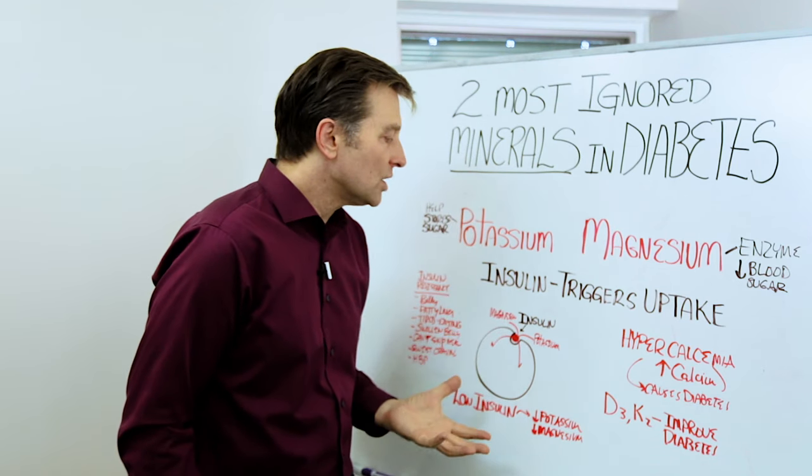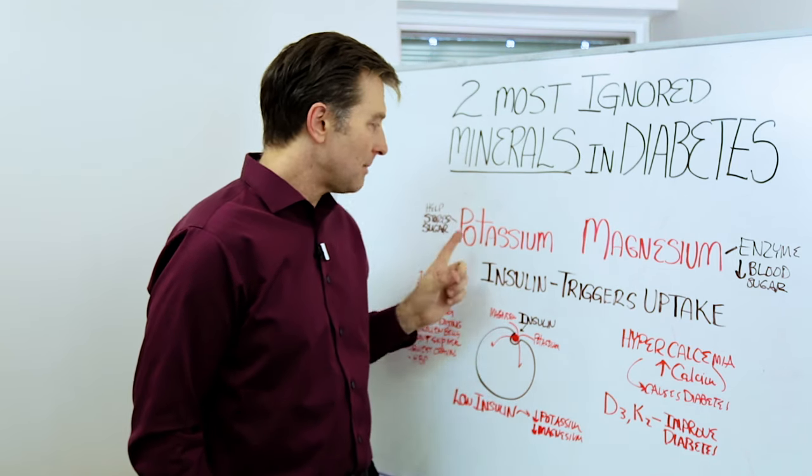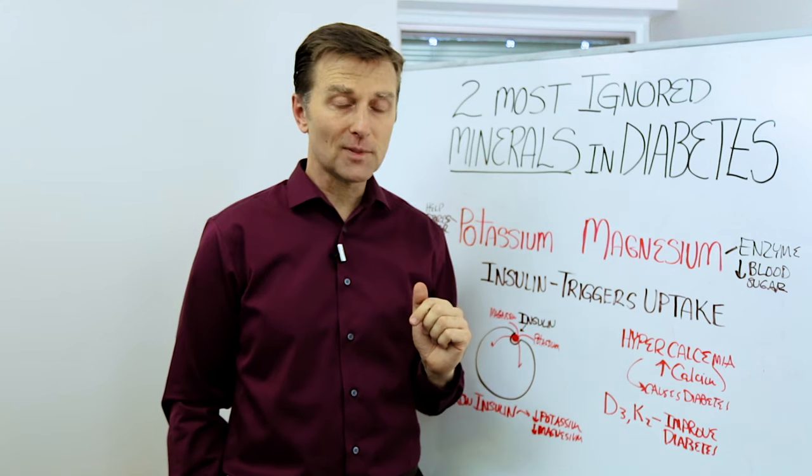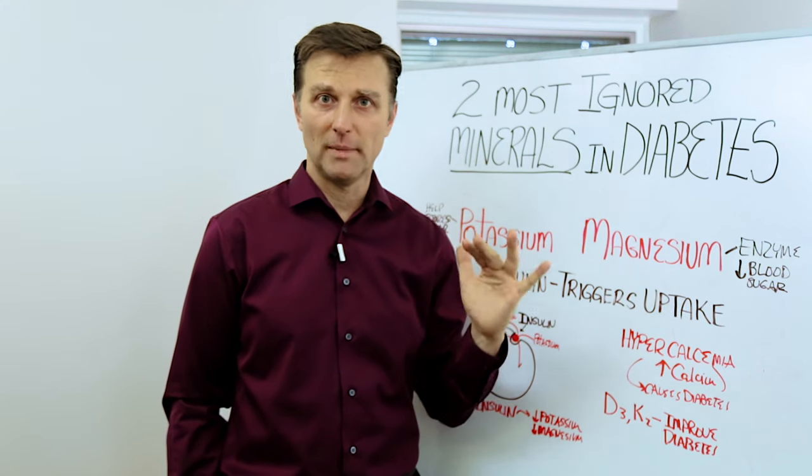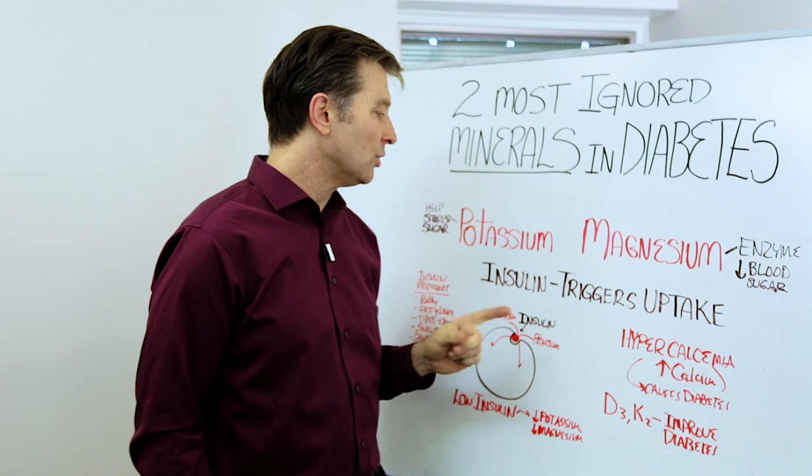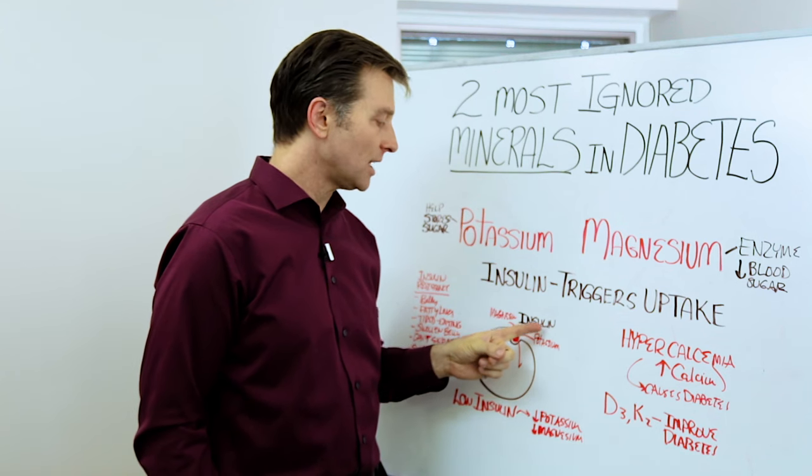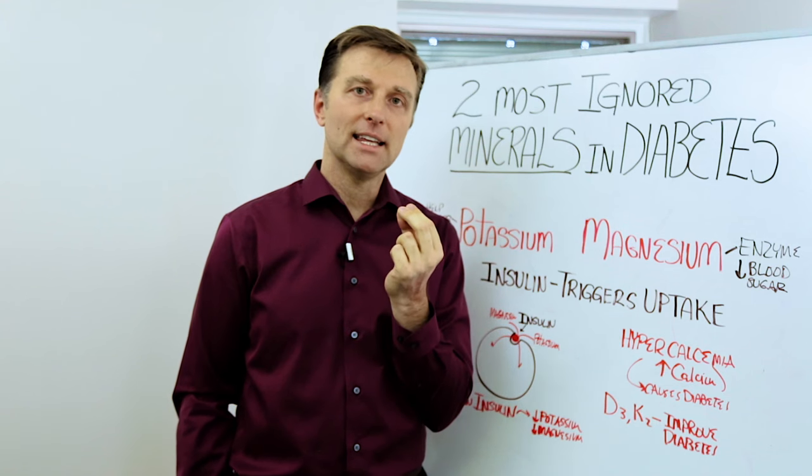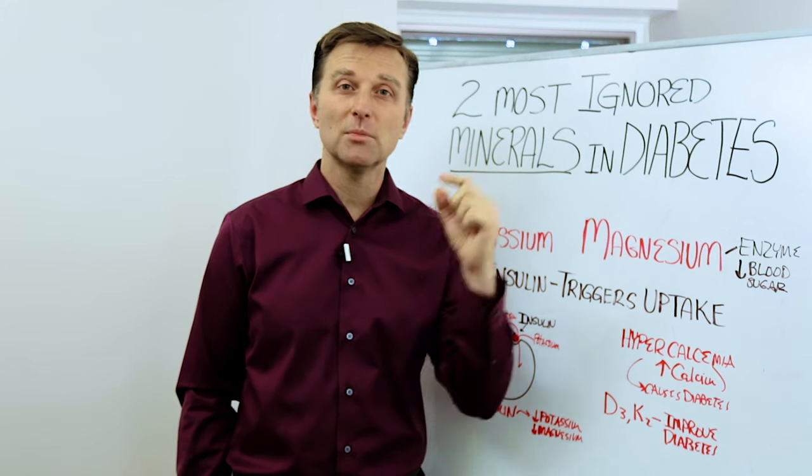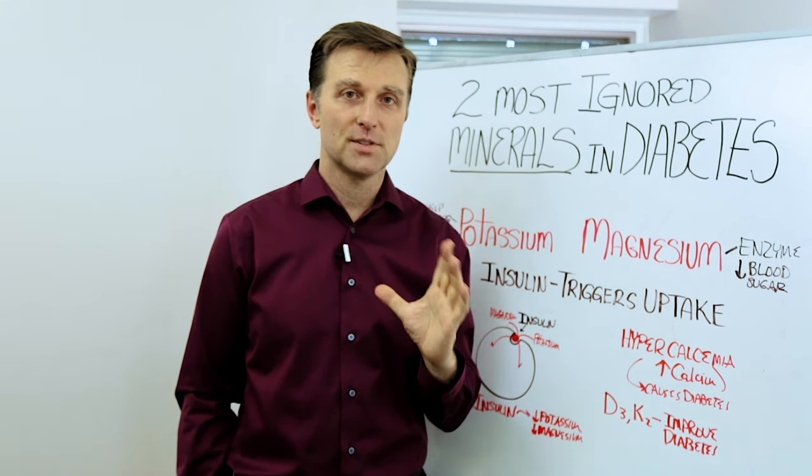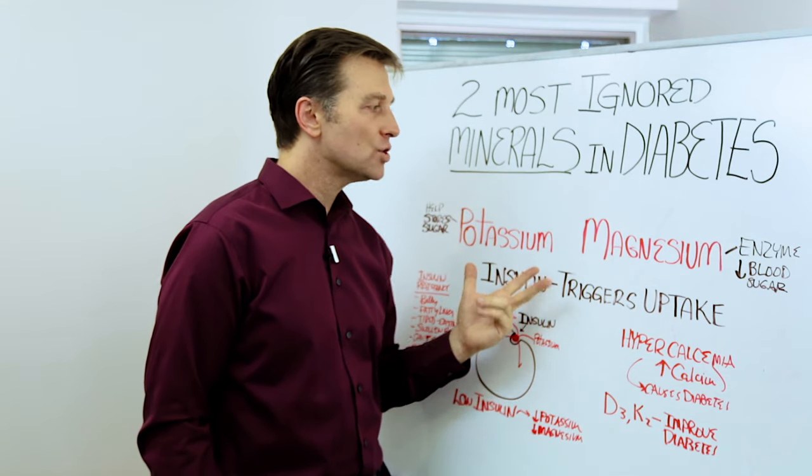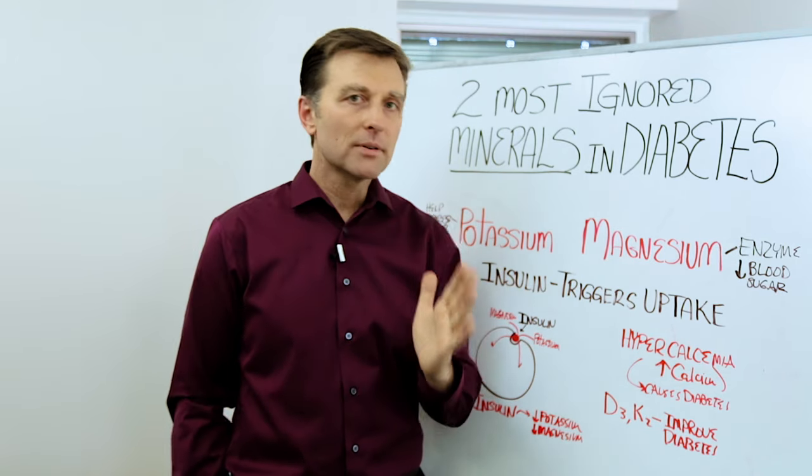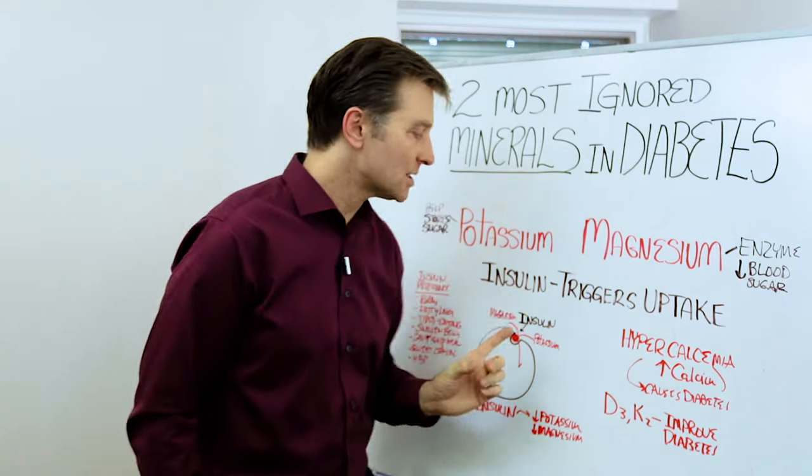So what happens is when you increase magnesium and potassium, or just normalize them, if you just have the normal amount, you can decrease the need for insulin. You can actually help heal the sensitivity to glucose and the insulin resistance. I'm going to put some links down below showing studies that demonstrate you can take these two minerals and greatly improve, if not fix, insulin resistance.